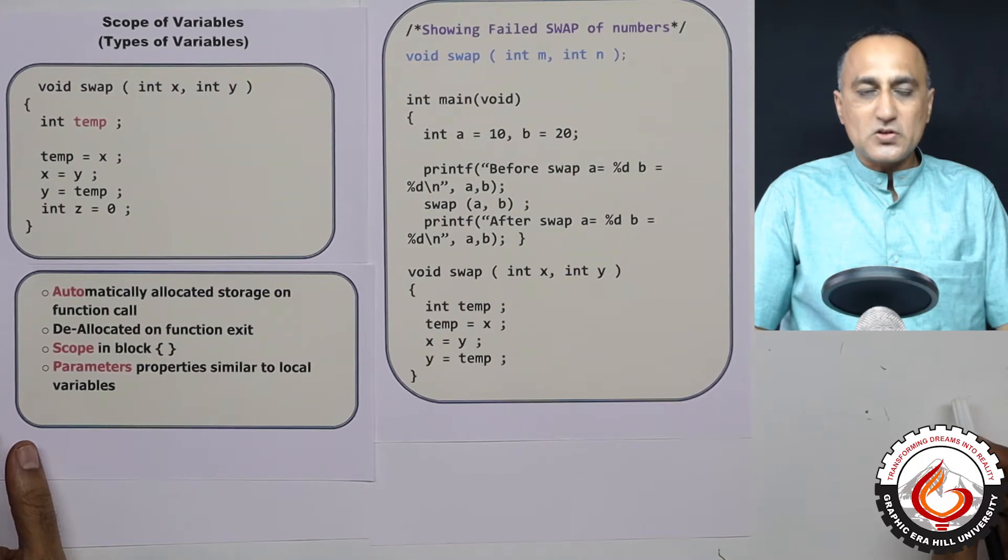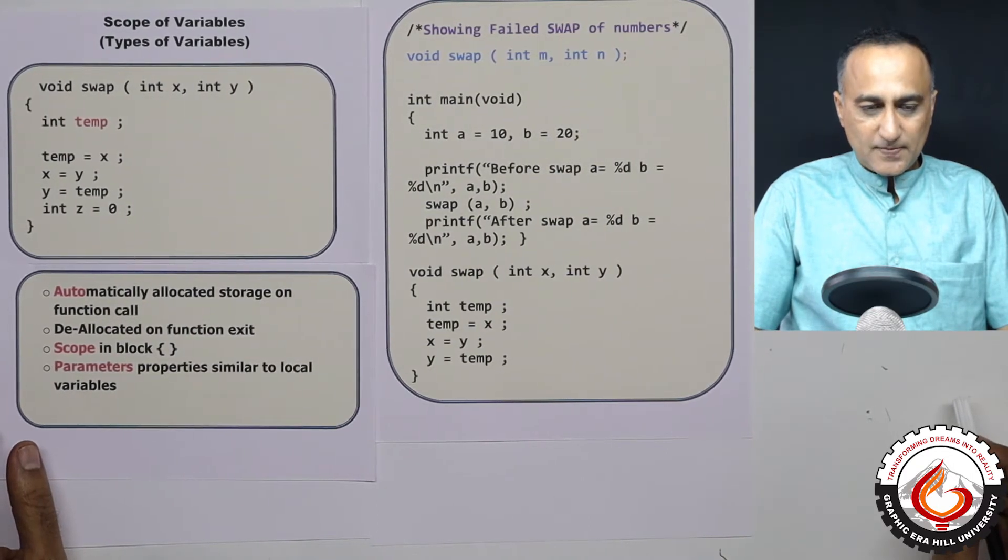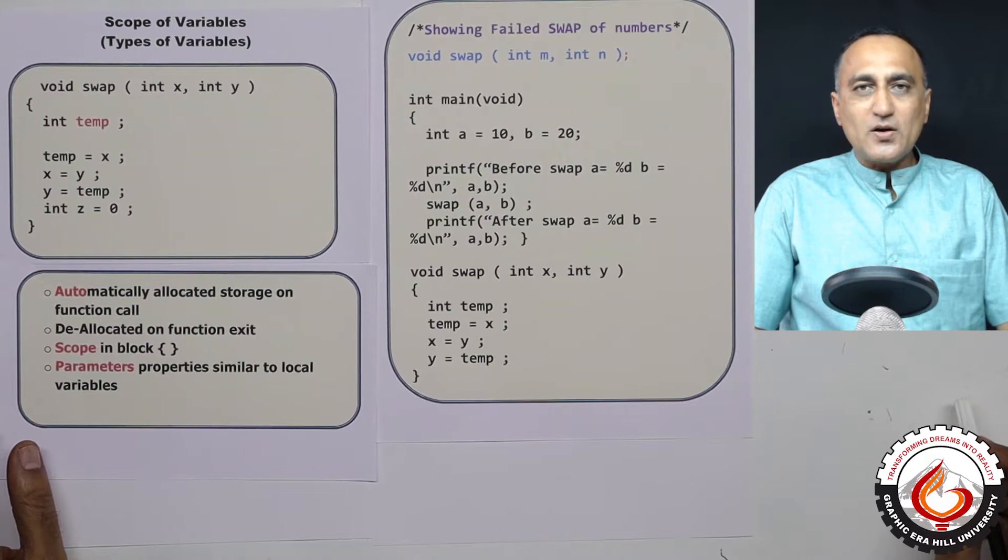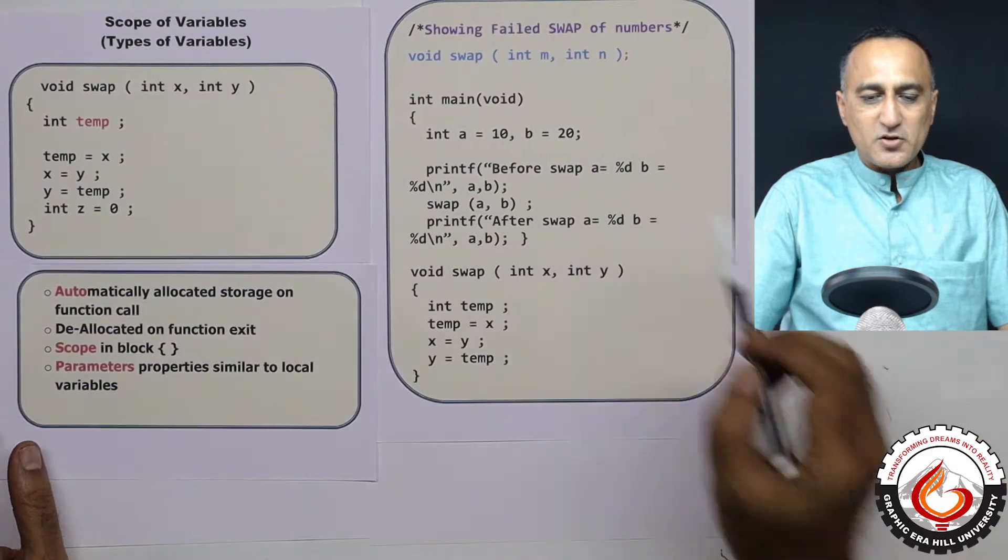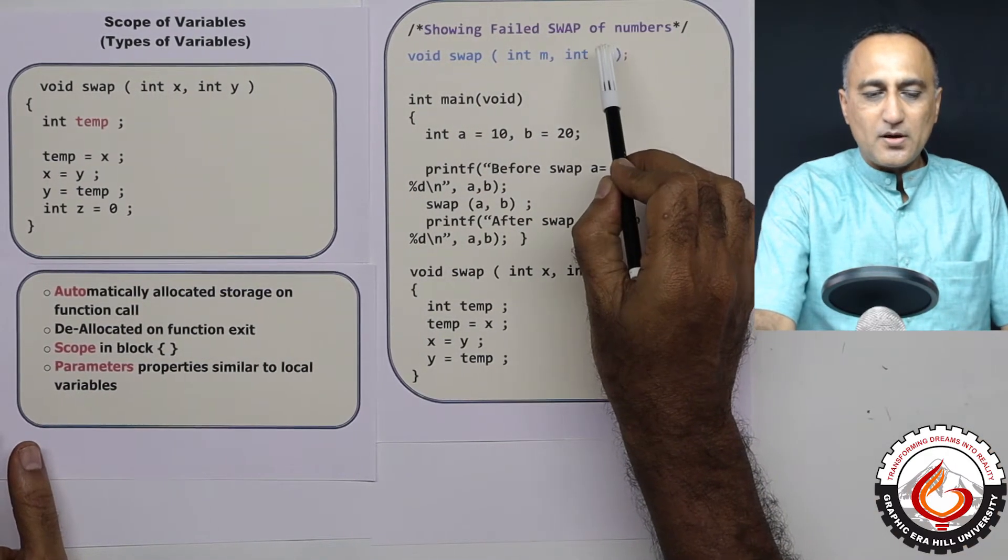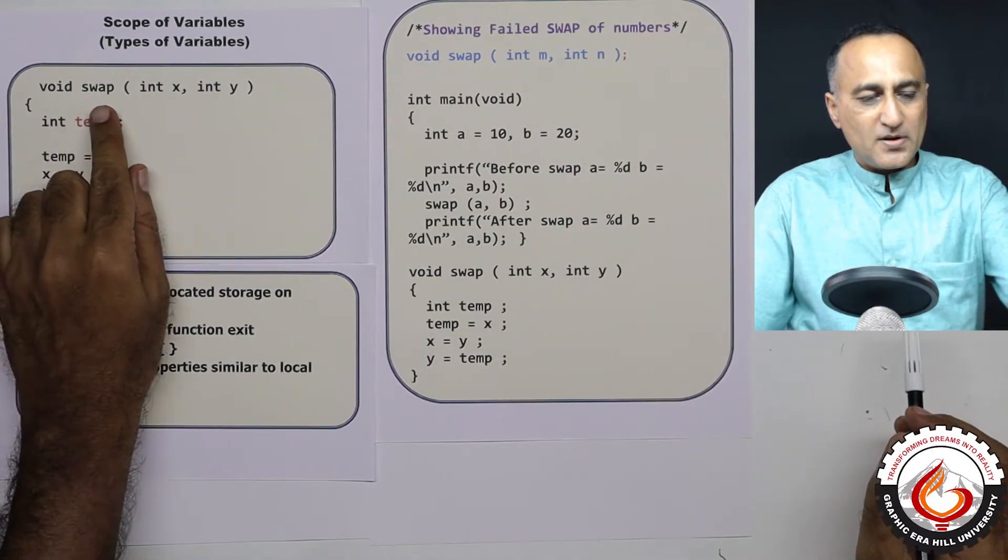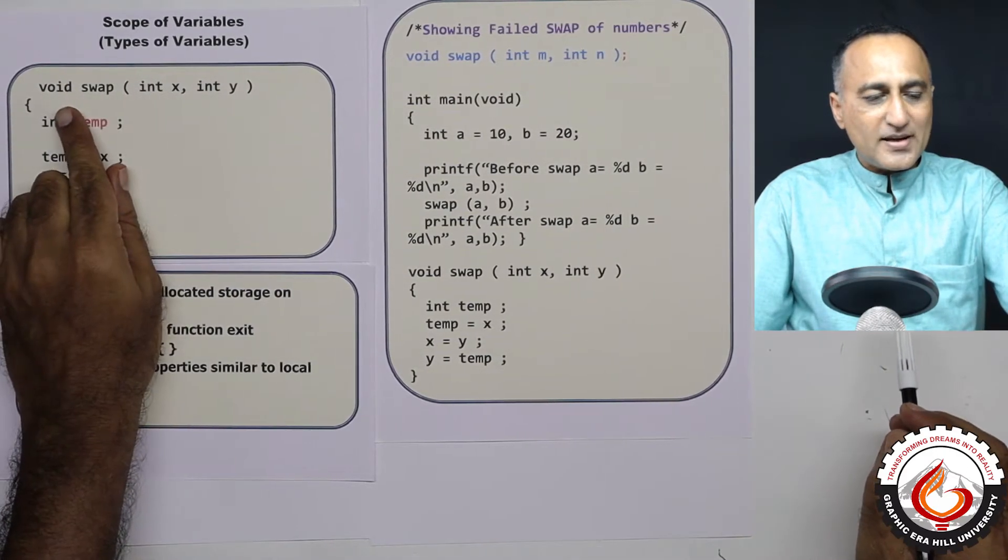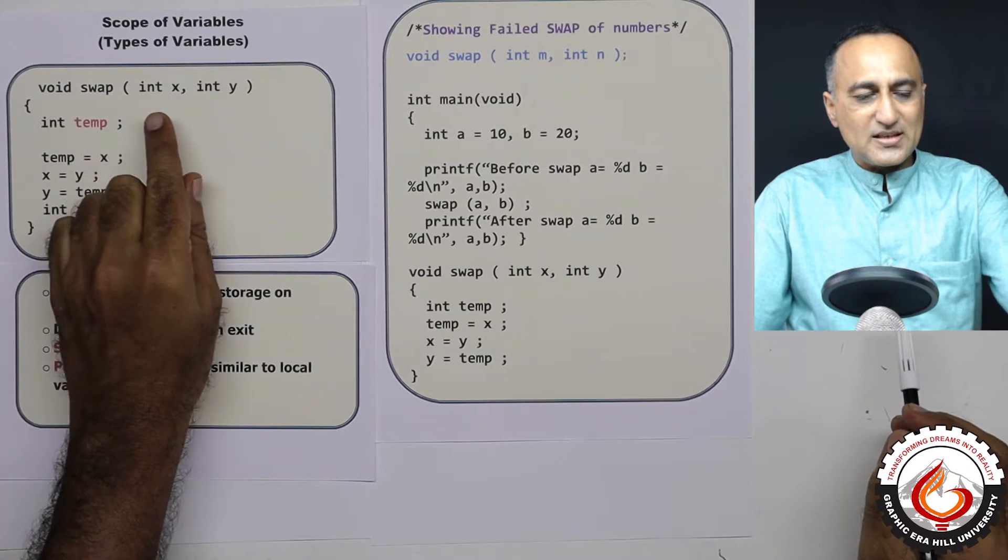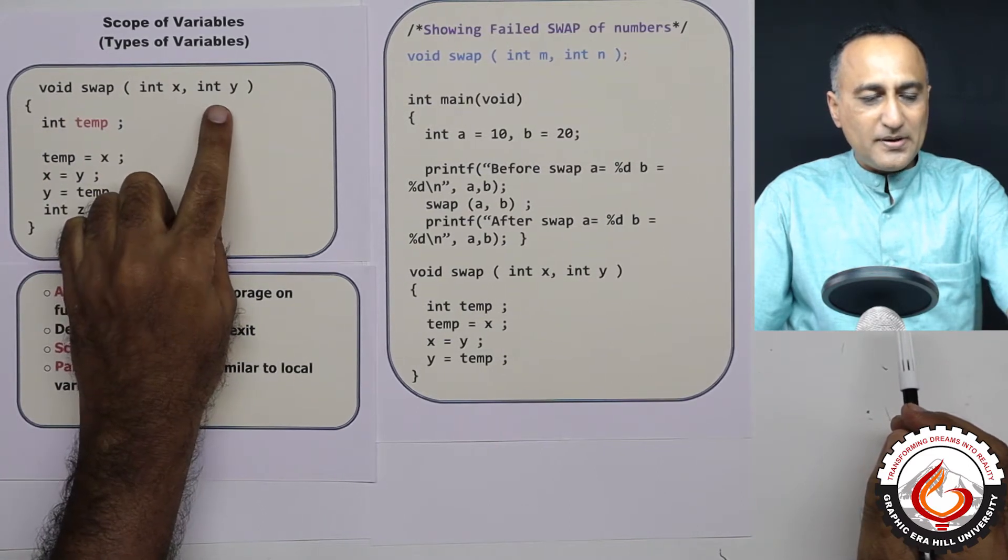We shall now talk about scope of variables. So we'll go back to our old function, which was a failed swap, which is shown here. So it is not returning any values, it is having two parameters of the type integer.